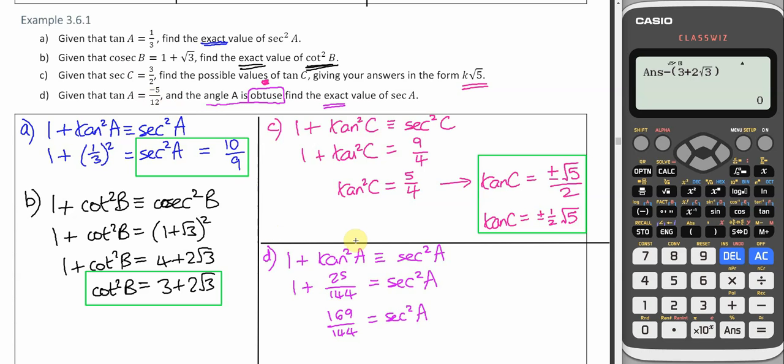That's 169 over 144. And then it's sec A that we want, not sec squared. So we need to square root both sides.